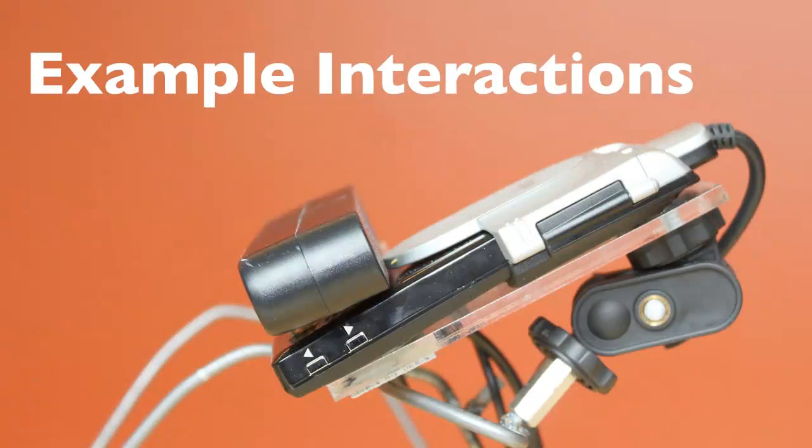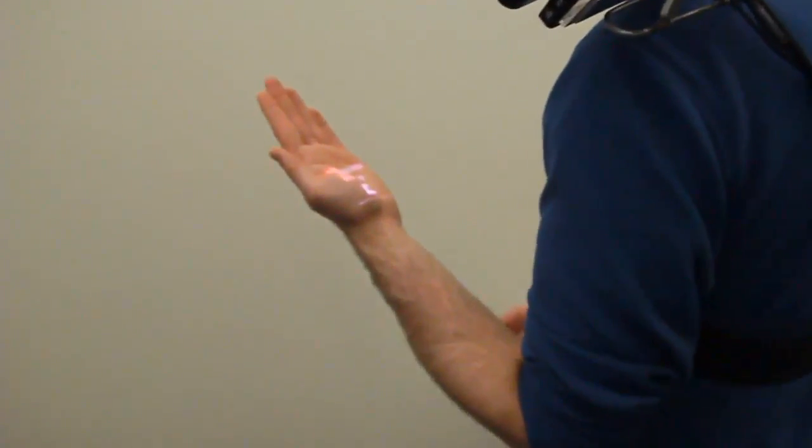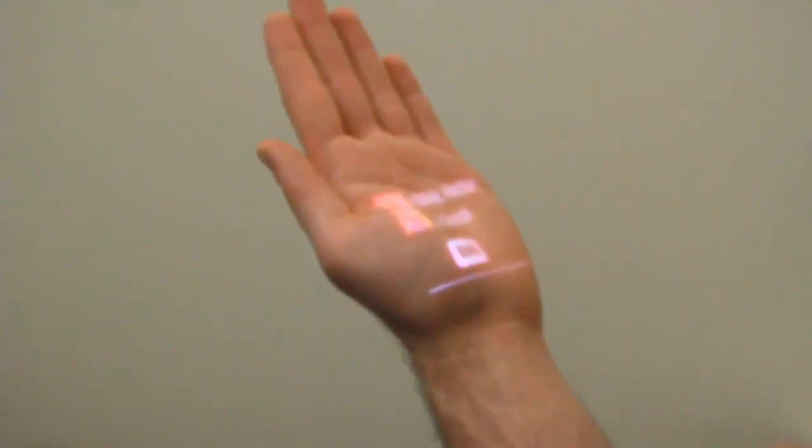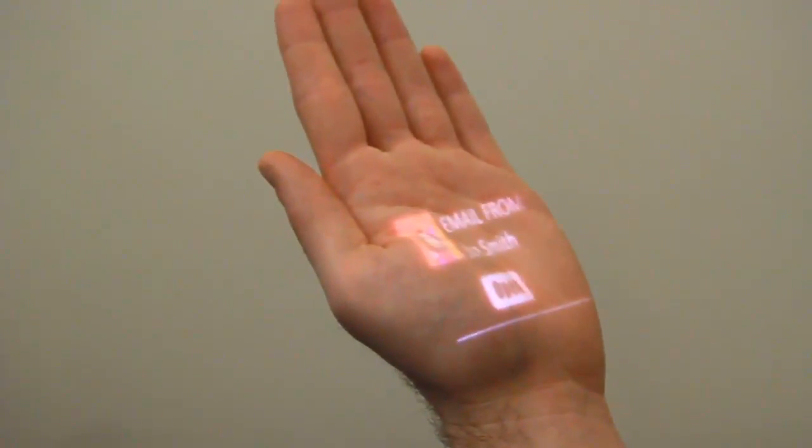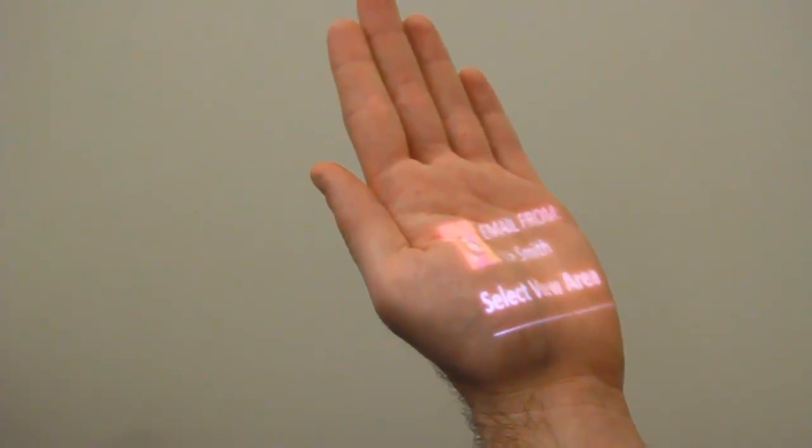To showcase our system's capability, we developed numerous demonstration applications. In this example sequence, a user is alerted to a new email. They are prompted to open the message, and then select an area for viewing.